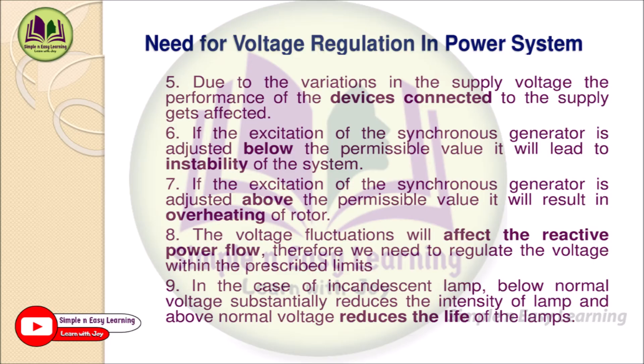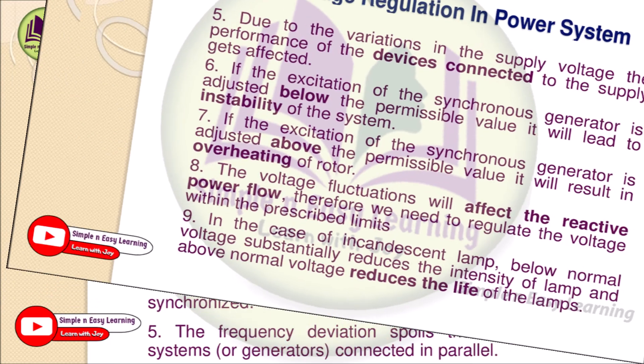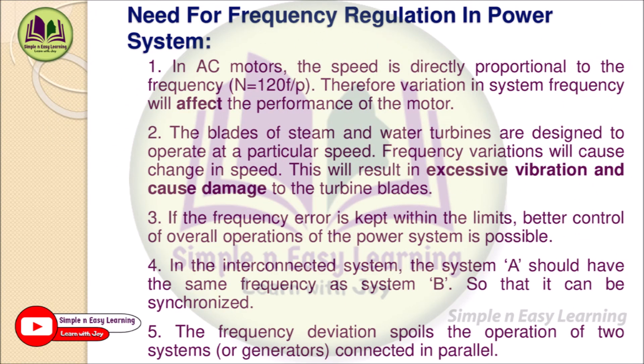Regarding the need for frequency regulation in power systems: First, in AC motors, speed is directly proportional to frequency — N = 120F / P — so variation in system frequency directly affects motor performance. Second, the blades of steam and water turbines are designed to operate at a particular speed; frequency variation causes speed changes, resulting in excessive vibration and damage to turbine blades.